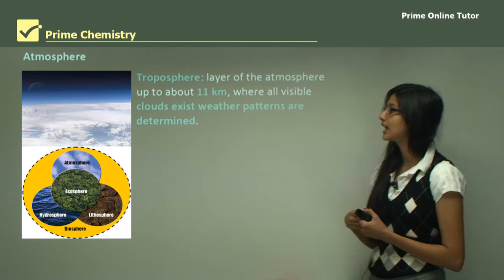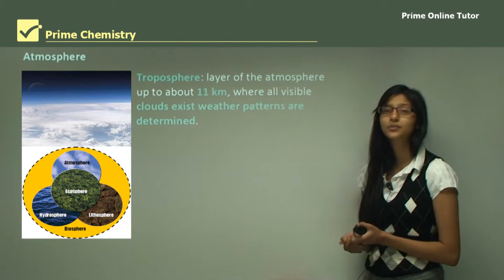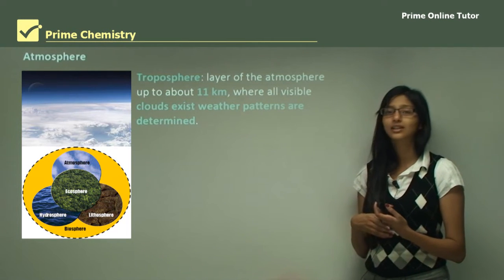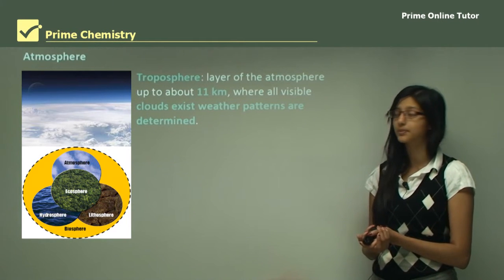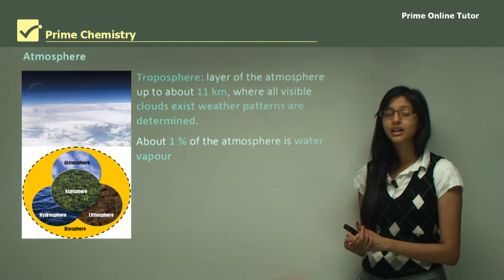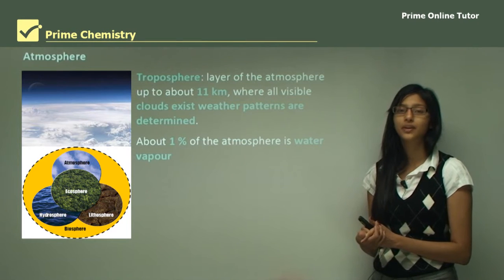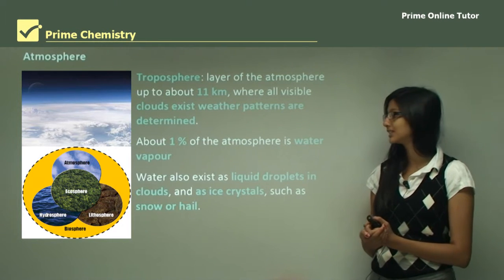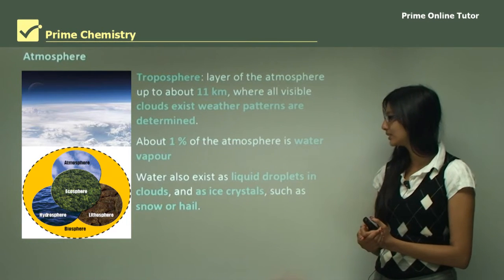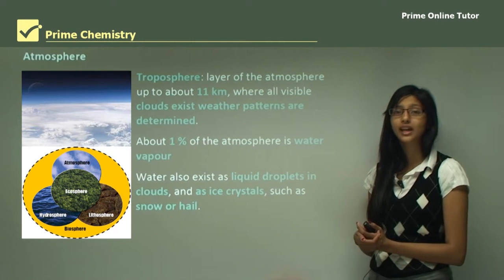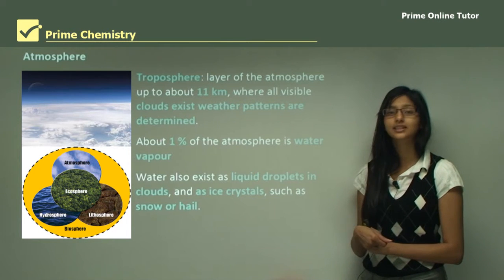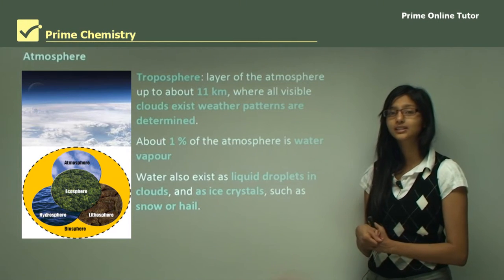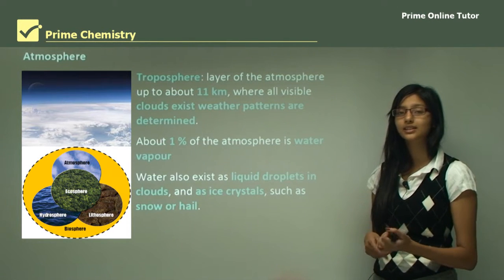The atmosphere can be divided into layers. The first layer is the troposphere, the layer closest to us, about 11 kilometers above the Earth's surface. All the clouds we see when we look up are in the troposphere. About 1% of the atmosphere is water vapor, existing in gas form. Water also exists as liquid droplets in clouds, and as solids such as ice crystals, snow, or hail. So in the atmosphere, water exists in all three states: gas, liquid, and solid.